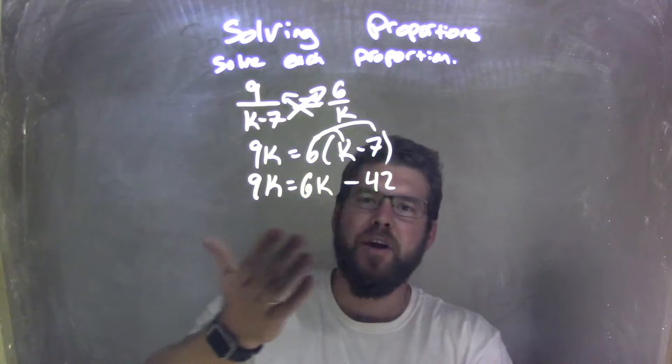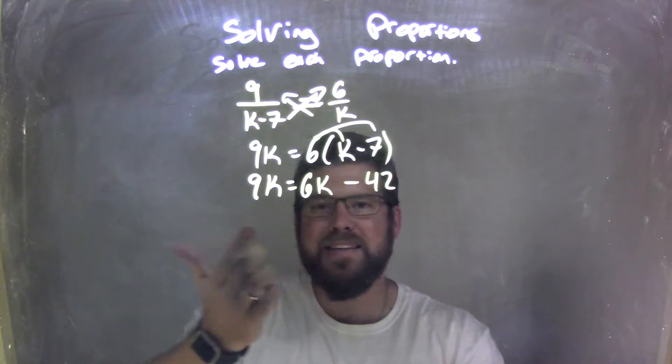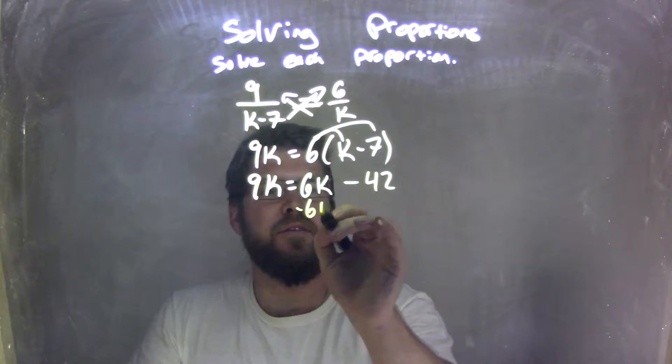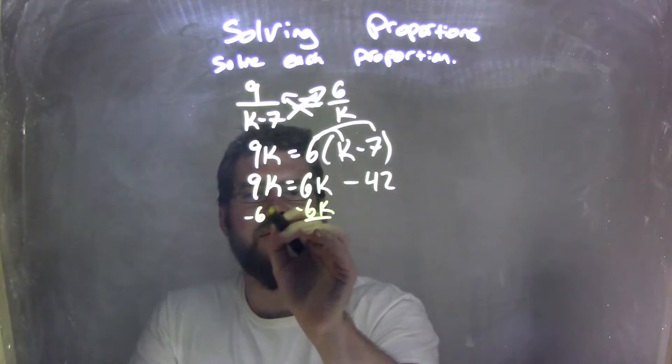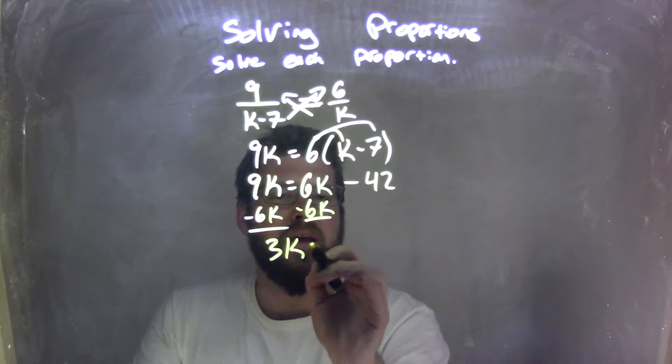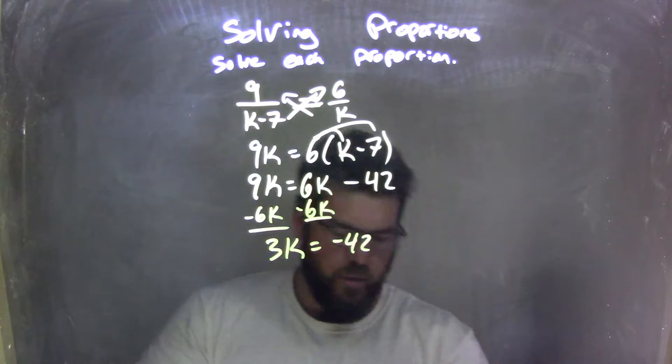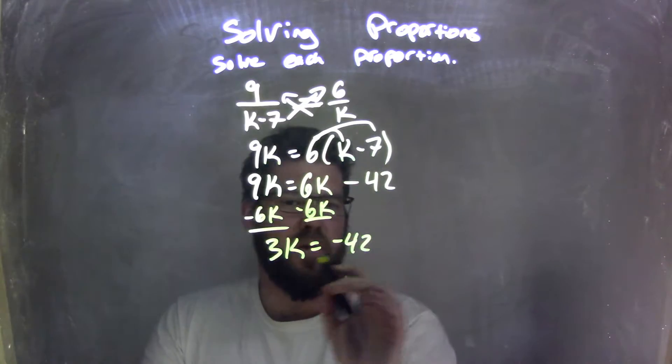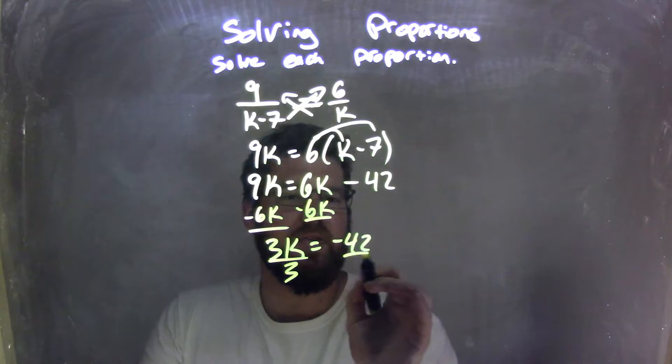Now I bring my like variables together, so I'm going to subtract the 6k to the left. Subtract the 6k, leaving me with 9k minus 6k is 3k, equals negative 42. Well, how many times does 3 go into negative 42? Because I need to divide by 3 to both sides.